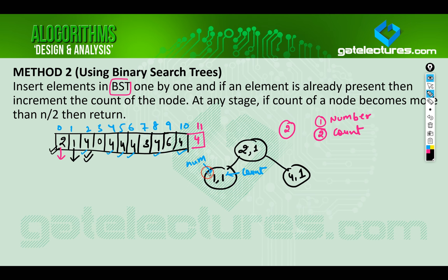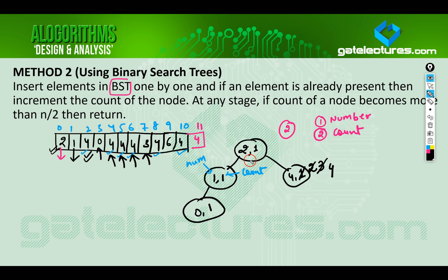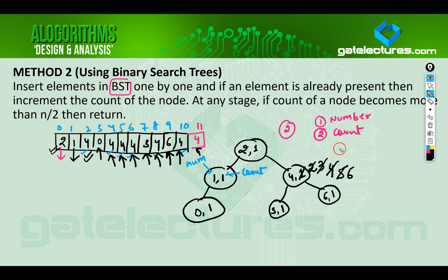The next element is 0, which is less than both 2 and 1, so we add node (0, 1). The next element is 4, which already exists, so we increment its count to 2. The next three 4s increment the count to 3, then 4. Then element 3 — greater than 2 but less than 4 — is inserted as node (3, 1) on the left of 4. Element 4 increments count to 5; element 6 is inserted to the right of 4; and the final two 4s bring its count to 7.